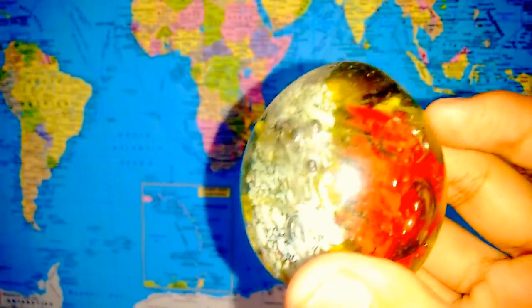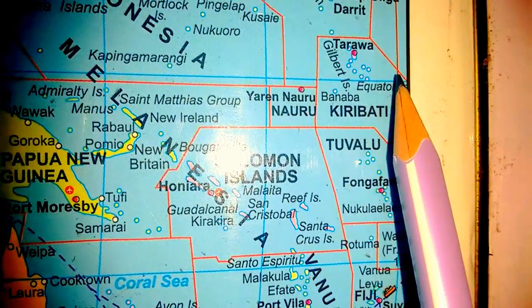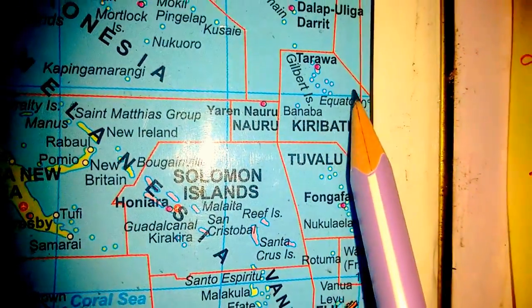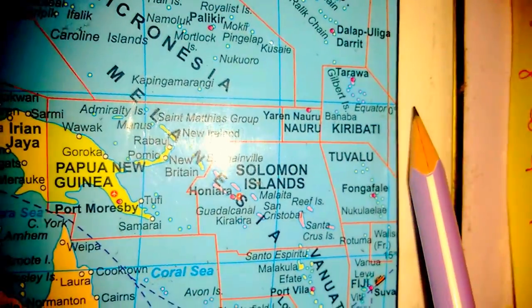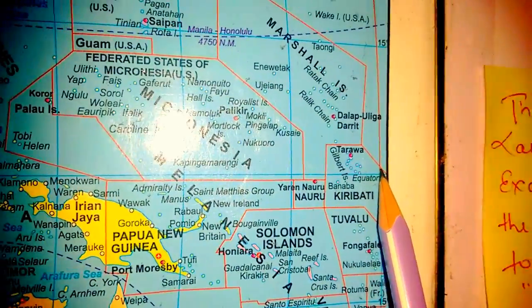Now I am going to locate the line of equator on this world map. Please be focused. I think this word might be visible to you — where is the equator? It's here. This word is 'Equator'. How much angle is visible to you? This is zero degrees. This is called the line of equator.